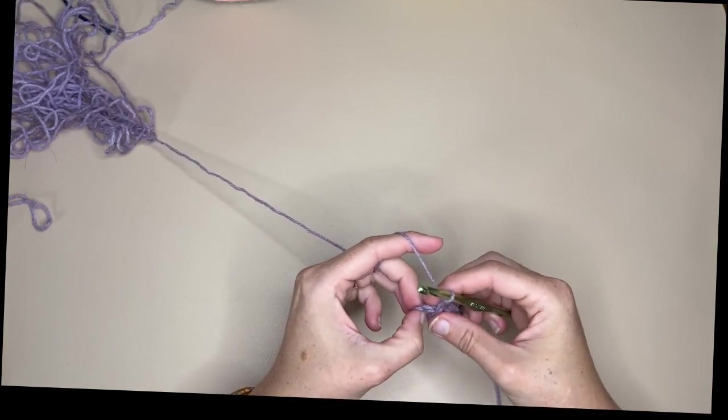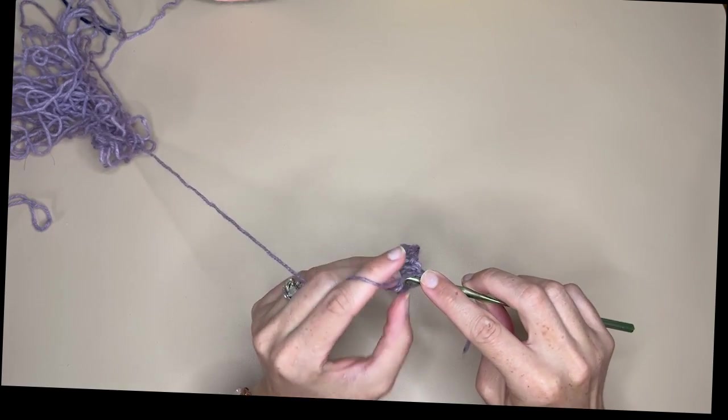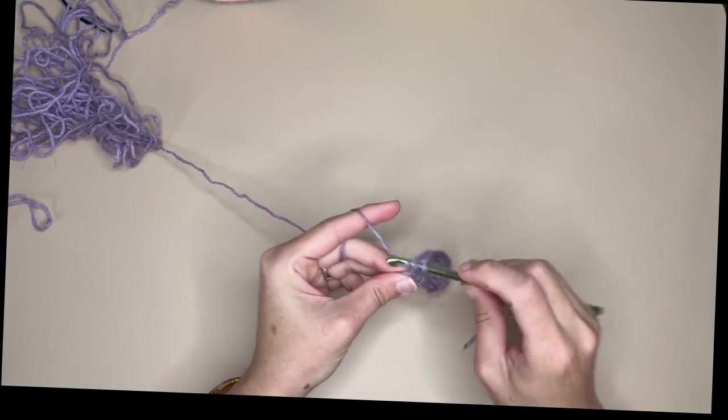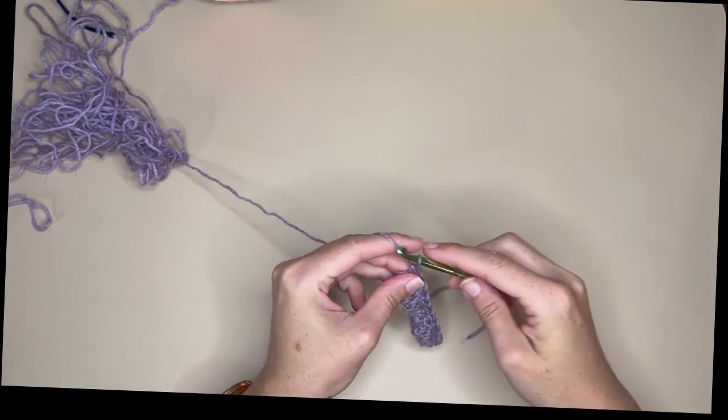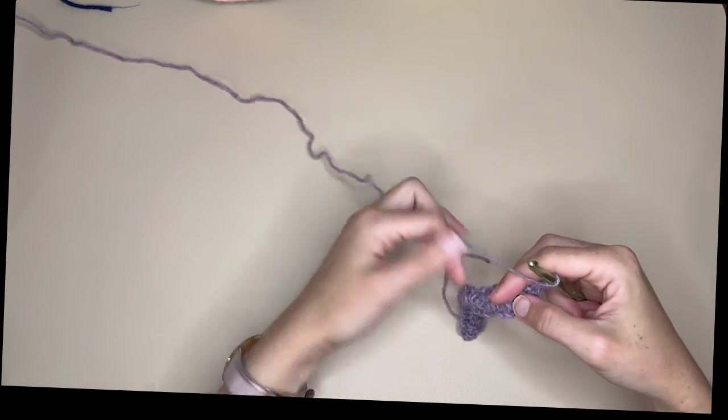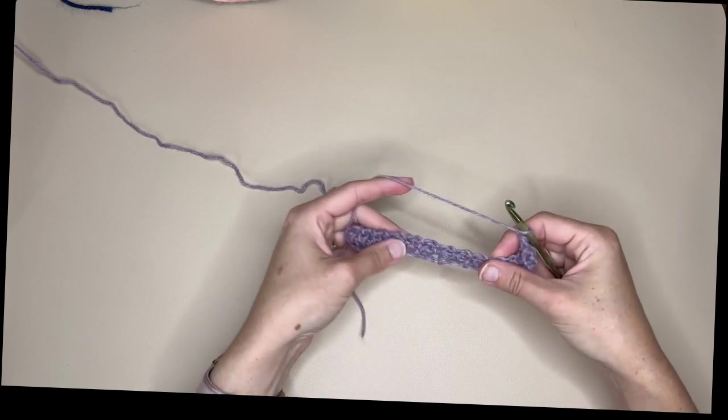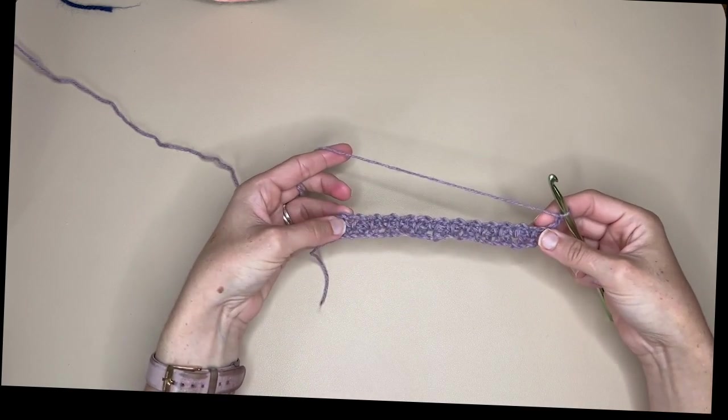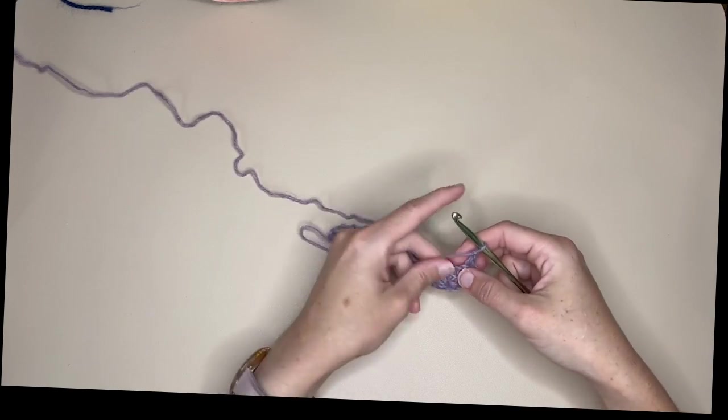All right and then once you get to your end we are going to just do a single crochet into that turning chain, chain one, and it's still a little hard to see so far but this is the pattern.